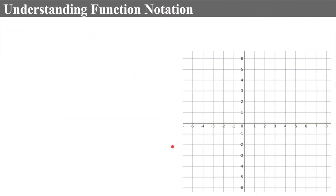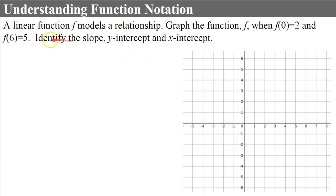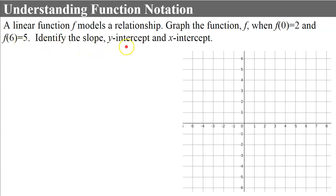Now we're going to apply what we've learned about function notation. A linear function f models a relationship. We're going to graph the function f when f(0) equals 2 and f(6) equals 5, then identify the slope, y-intercept, and x-intercept.